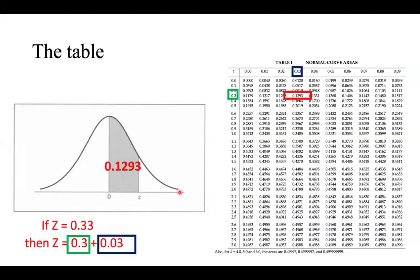So let's look at an example. If the z-score were to be 0.33, then we look at the green box, and then the green box corresponds to the column.